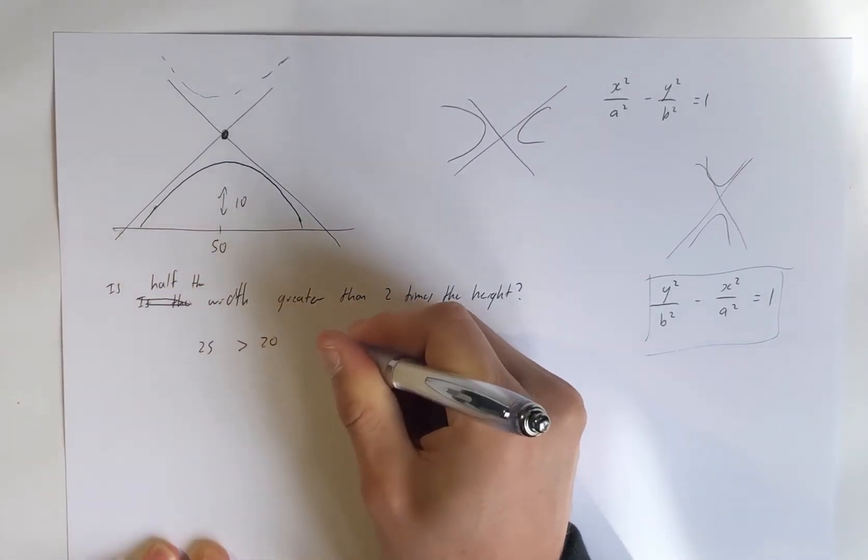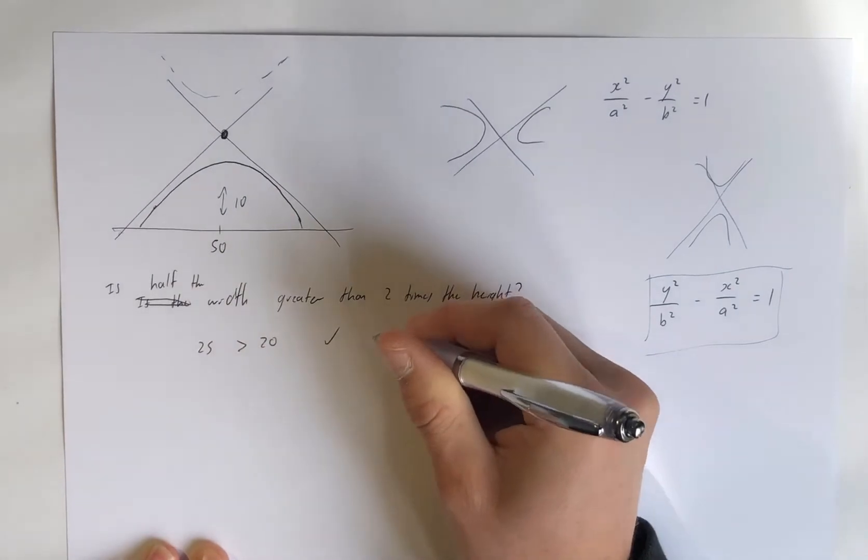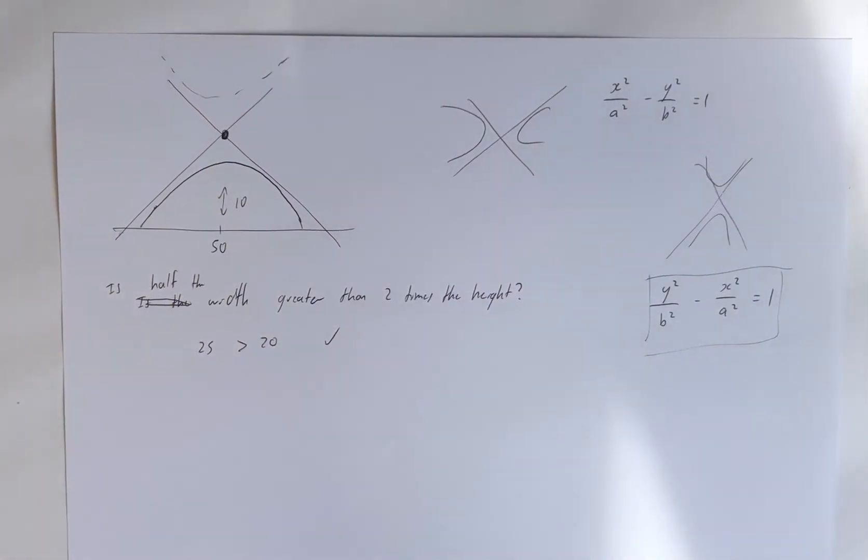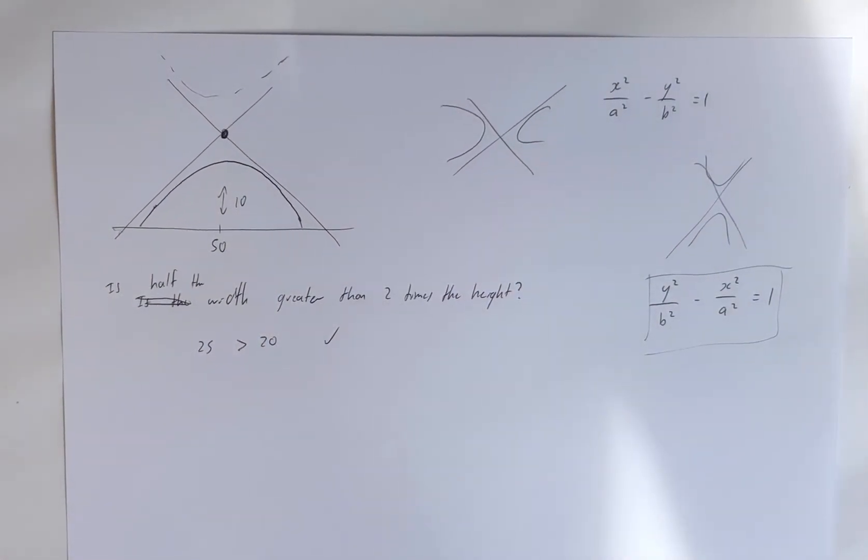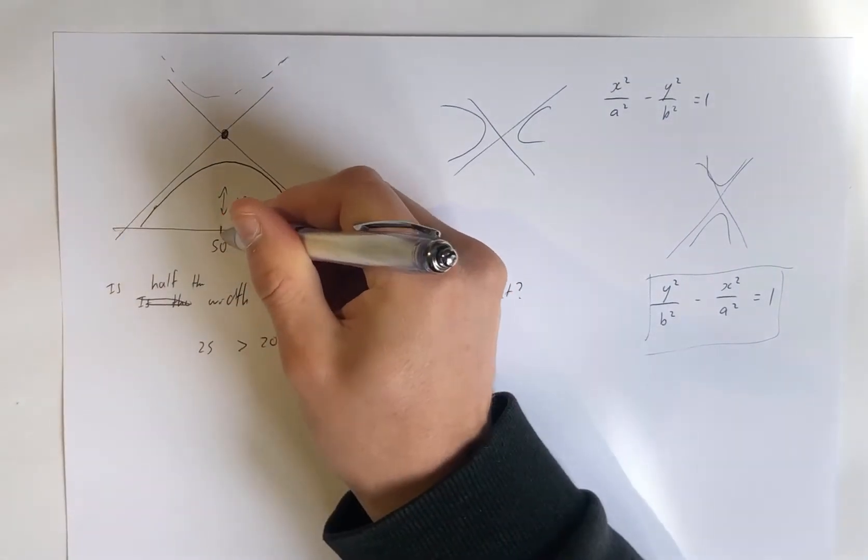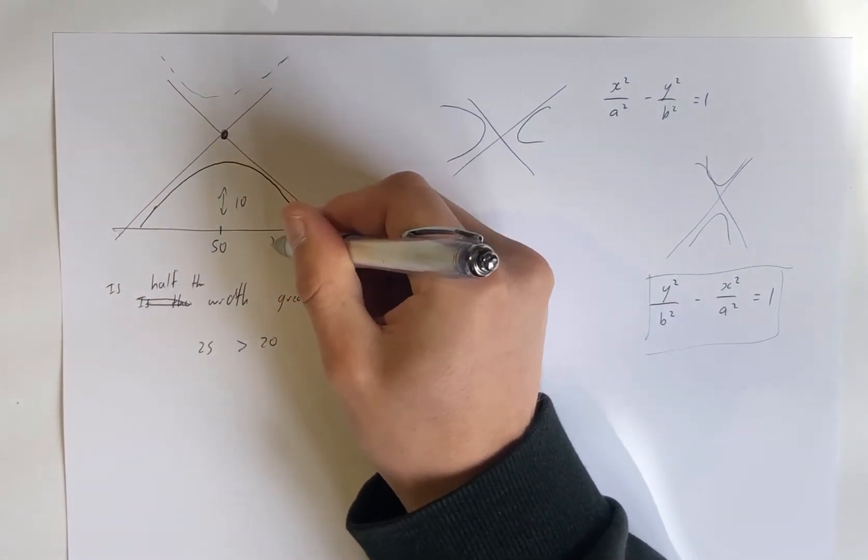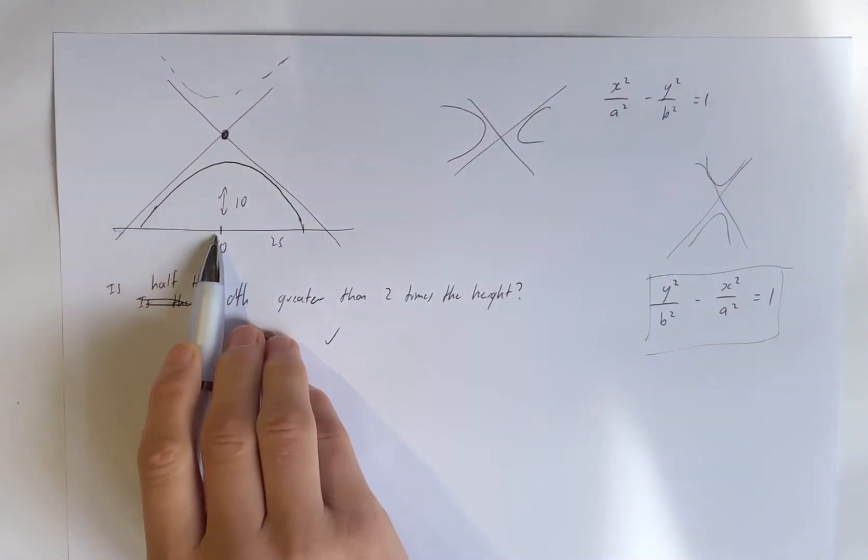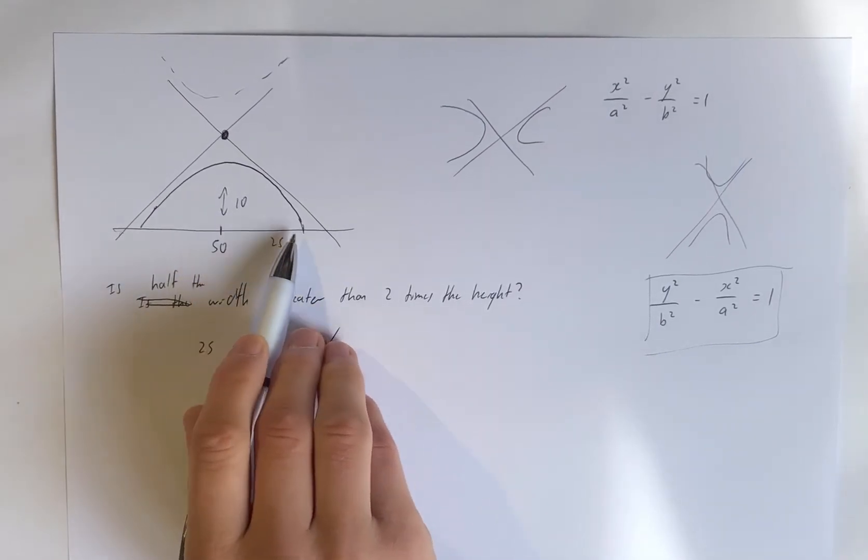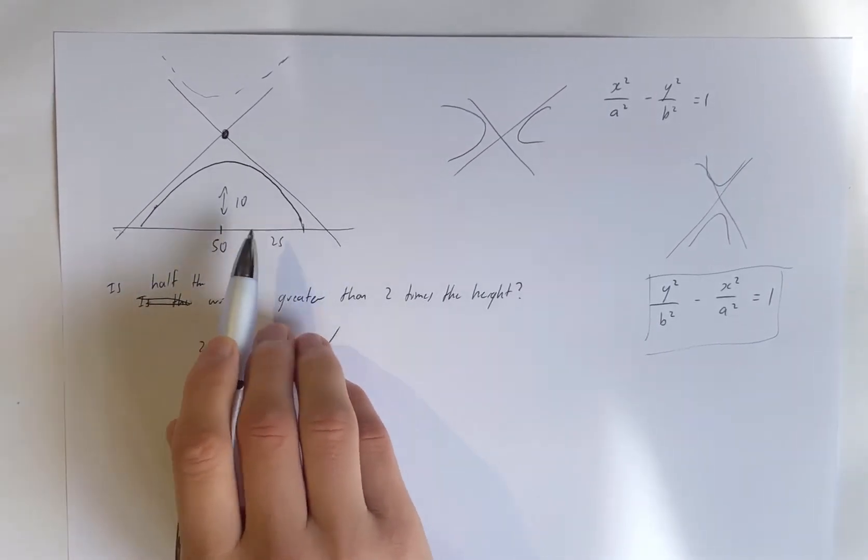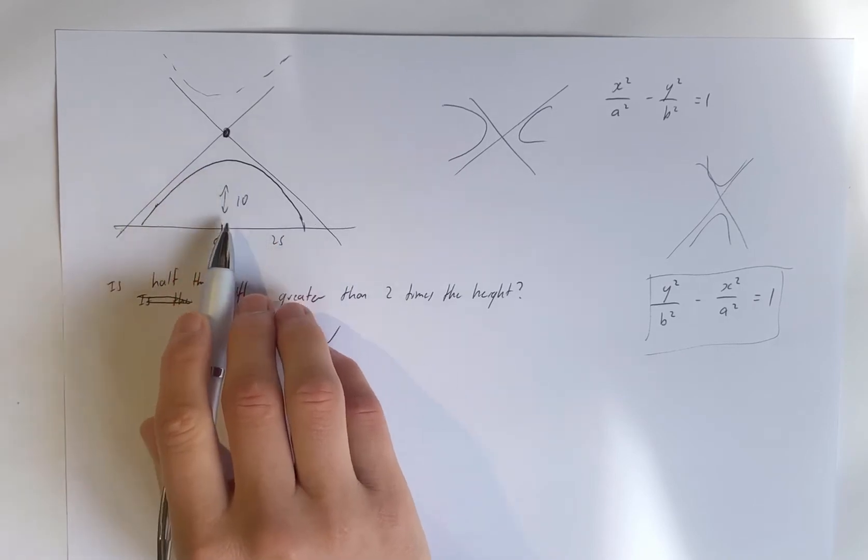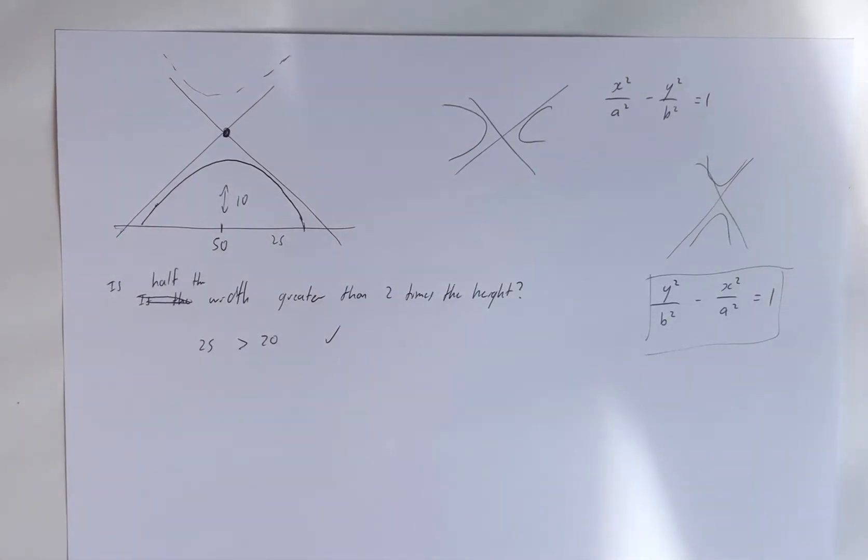So is the width, or should I say sorry, is half the width greater than 2 times the height? Yes, then we can fit a hyperbola to it. If half of that width, so it's 25, if that width there from the center to the outside, if that is greater than 2 times the height, then we can fit a hyperbola. And I'll prove that at the end of the video, actually.